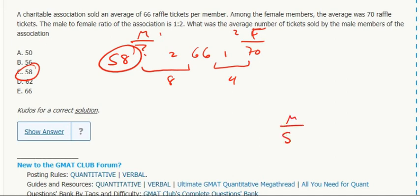You can check to see how that works. If you knew from the jump that males were 58, females were 70, and overall it was 66, I mean that's eight, that's four, that's two to one, flip it one to two, male to female is one to two, just like they told us.